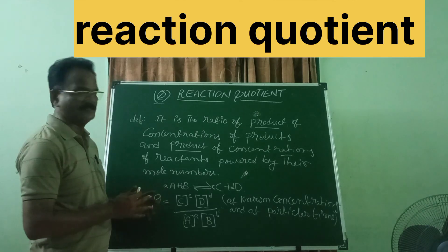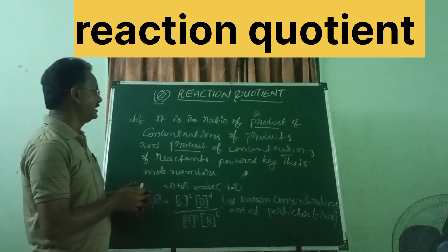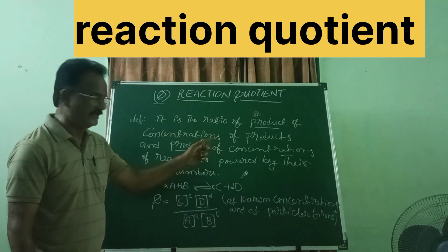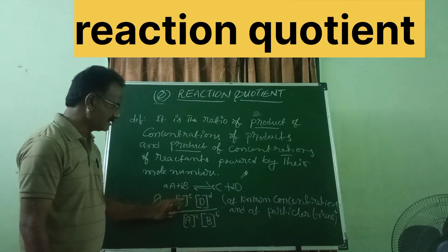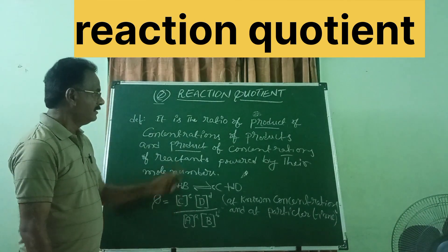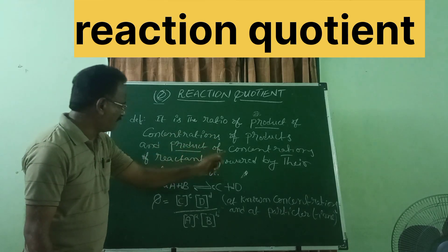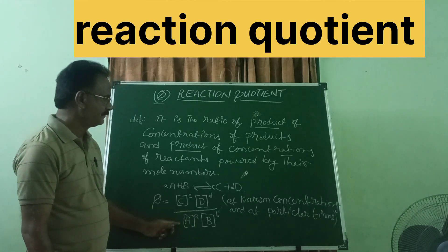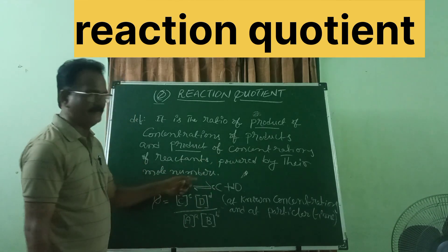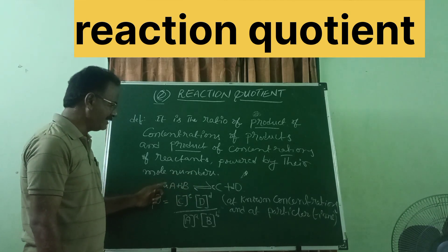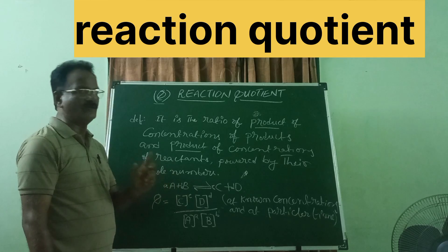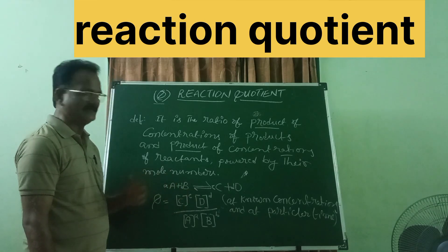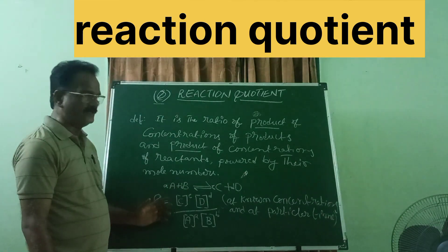Let us check the expression with the definition. The definition states it is the ratio of product of concentrations of products — these are the product of concentrations of products — and product of concentrations of reactants — these are the product of concentrations of reactants — powered by their mole numbers. According to the equation, small a, small b, small c, small d are mole numbers, and we have written the mole numbers as exponents. This is the expression for reaction quotient.